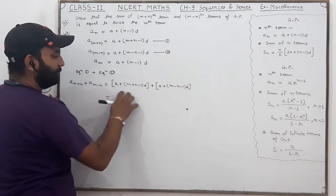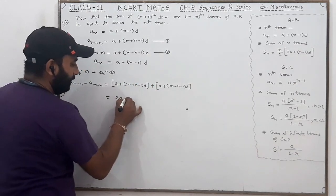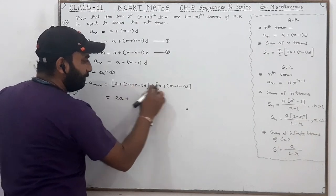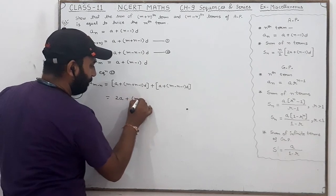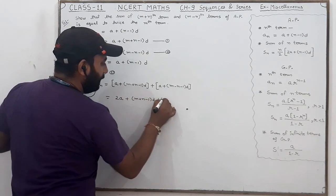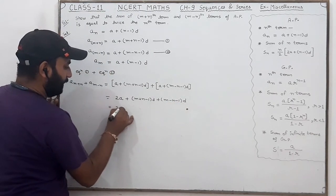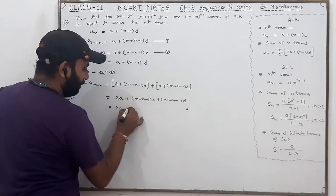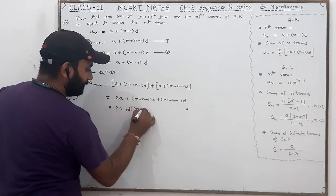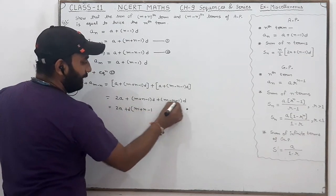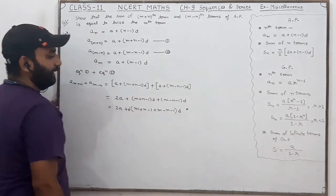Now we simplify. The two a's give us 2a. Taking d common from the remaining terms: d[(m+n-1) + (m-n-1)] = d[m+n-1+m-n-1] = d[2m-2] = 2(m-1)d. So the right-hand side becomes 2a + 2(m-1)d.